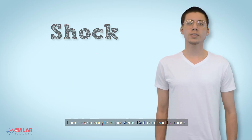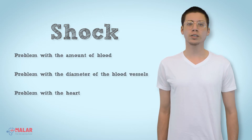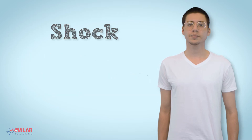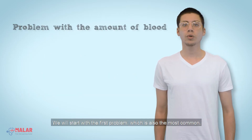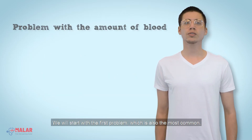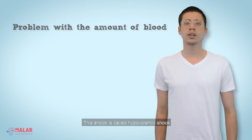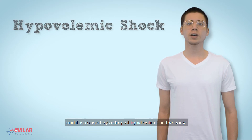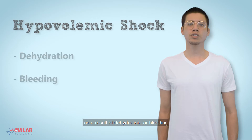There are a couple of problems that can lead to shock: a problem with the amount of blood in the body, a problem with the diameter of the blood vessels, and a problem with the heart. The first and most common is called hypovolemic shock, caused by a drop of liquid volume in the body as a result of dehydration or bleeding.